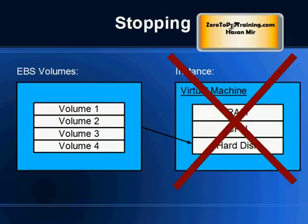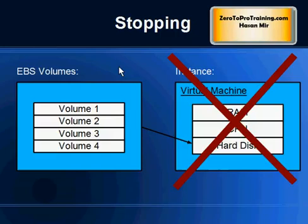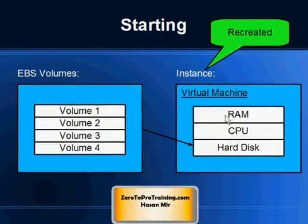When you stop an instance, it feels like your virtual machine has been suspended and you can turn it on anytime — but in fact, the virtual machine has been deleted and removed. The data is protected in the EBS volumes, which are outside the instance. So stopping an instance simply means your virtual machine is removed, but the data on EBS volumes is still there.